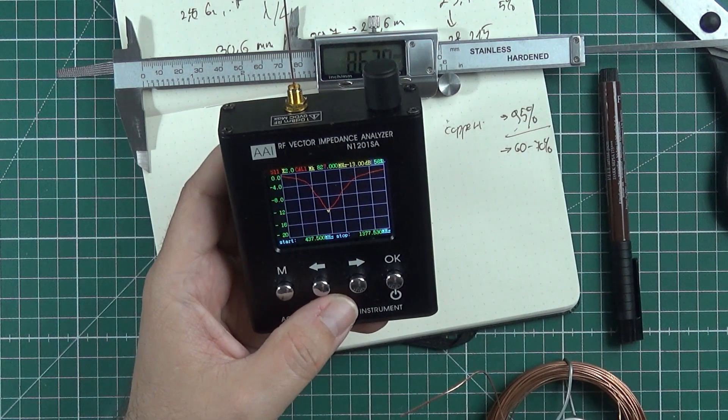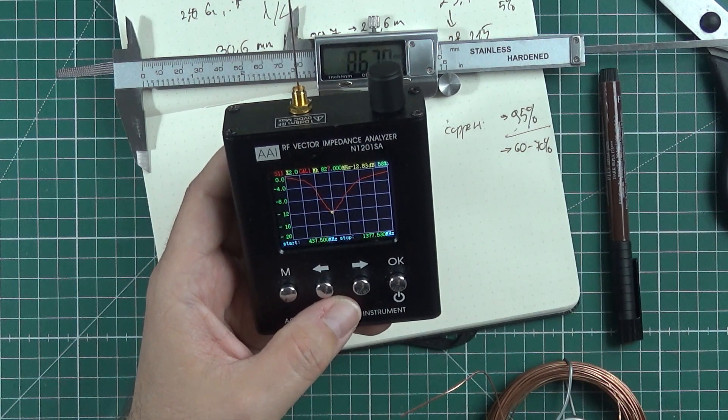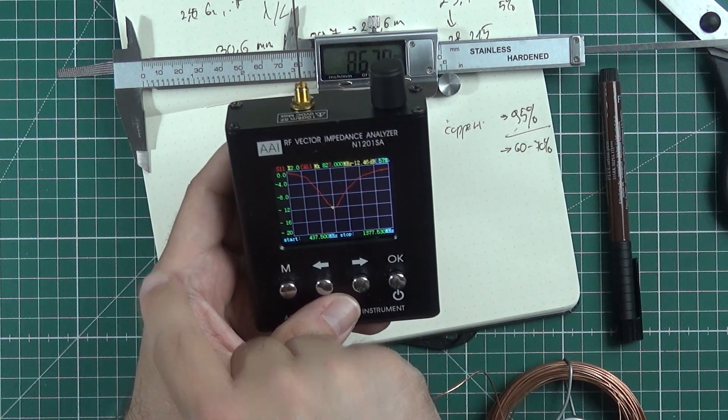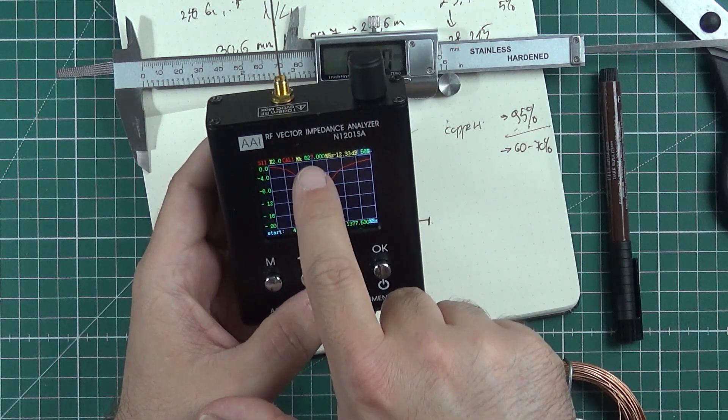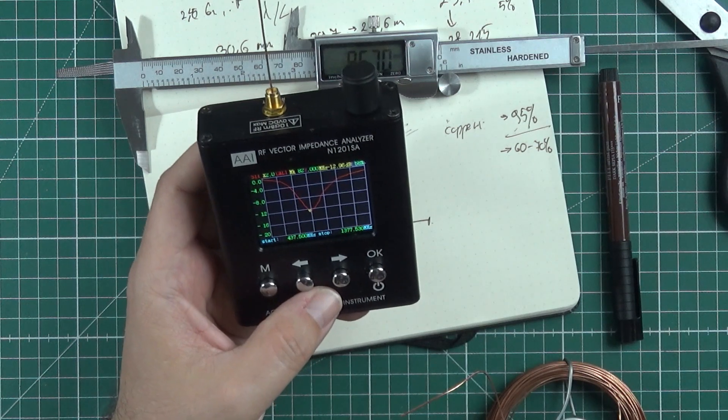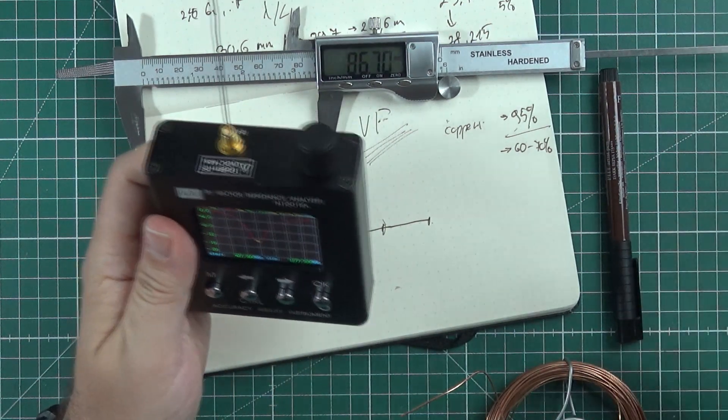Right now the antenna is tuned at more or less 827 megahertz. Why? Because it's too long. If the antenna is longer then it's tuned to the lower frequency. We have to make it shorter to make it tuned to 868 megahertz.